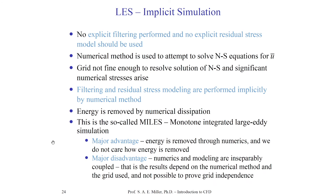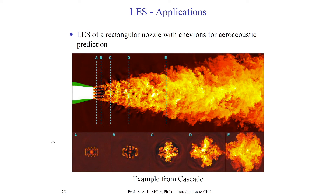Let's look at particular examples of large eddy simulations. This one is from Cascade — a company that came out of Stanford University. The flow moves from left to right through a nozzle. The colors represent properties of a turbulent jet. At each cross-section A through E, you can see how many scales of turbulence are being resolved — from very large scales down to tiny little waves representing acoustics — and tiny eddies coming out of the main jet, becoming fully developed downstream.